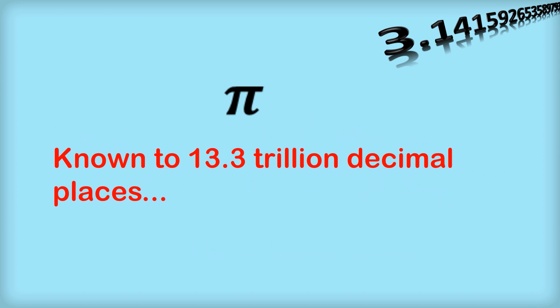And finally, before we get into the formulas, we currently know pi to about 13.3 trillion decimal places. Yet we only need about 30 decimal places to work out the circumference of the universe to within one millimeter, given its diameter.